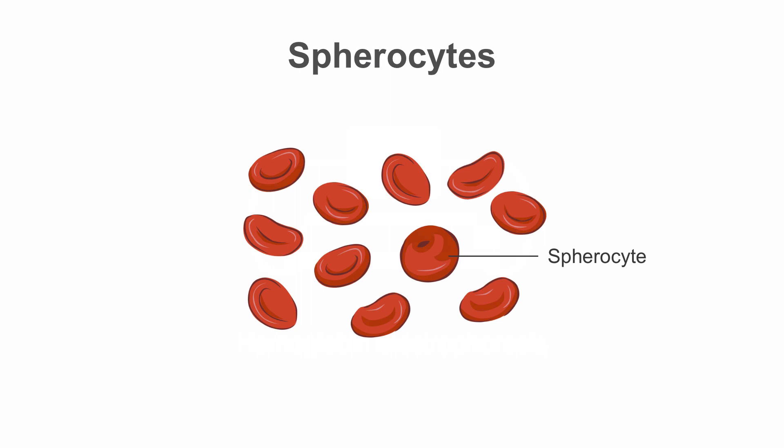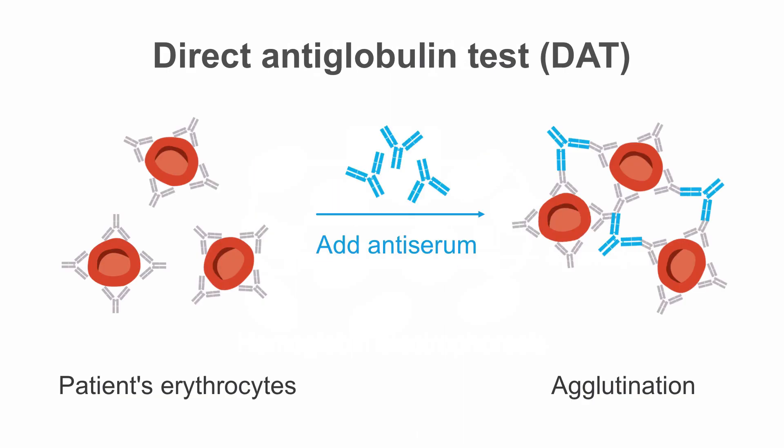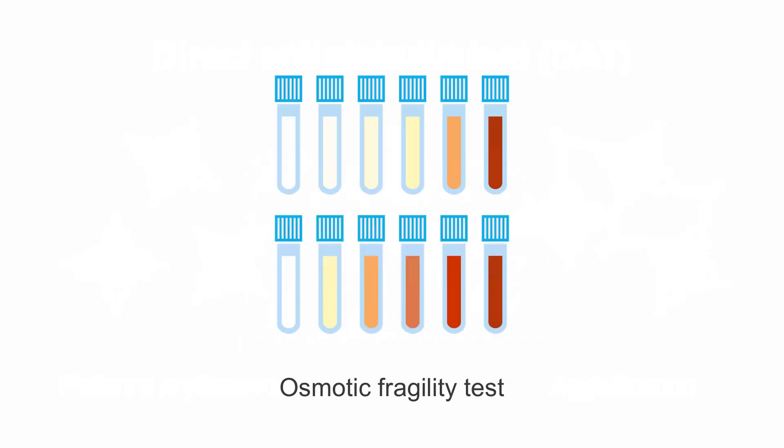Spherocytes are red cells with no central pallor. They are commonly present in patients with hereditary spherocytosis and autoimmune hemolytic anemia. If spherocytes are identified in a peripheral blood smear, additional testing for hemolytic anemia is indicated. This is done by a DAT. A positive DAT means that there are antibodies or complement on the red cell surface. If hereditary spherocytosis is suspected, an osmotic fragility test may be ordered.